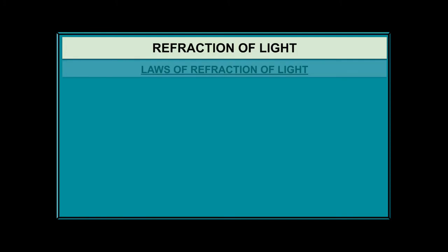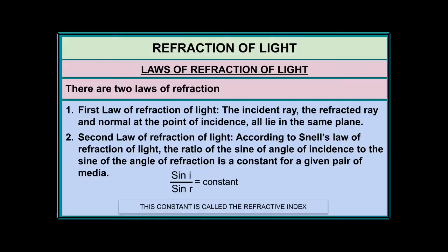Now we study the laws of refraction of light. There are two laws. The first law states that the incident ray, the refracted ray, and the normal at the point of incidence all lie in the same plane — similar to the laws of reflection.